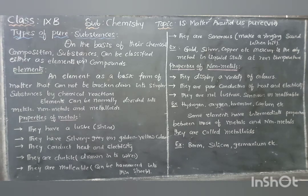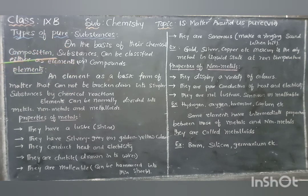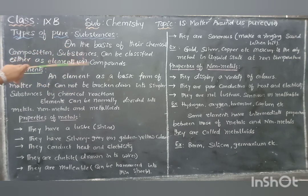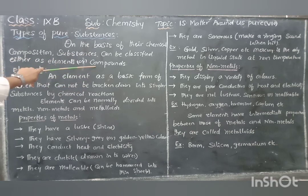Next, types of pure substances. Pure substances are classified on the basis of their chemical composition. Pure substances can be classified as either elements or compounds.